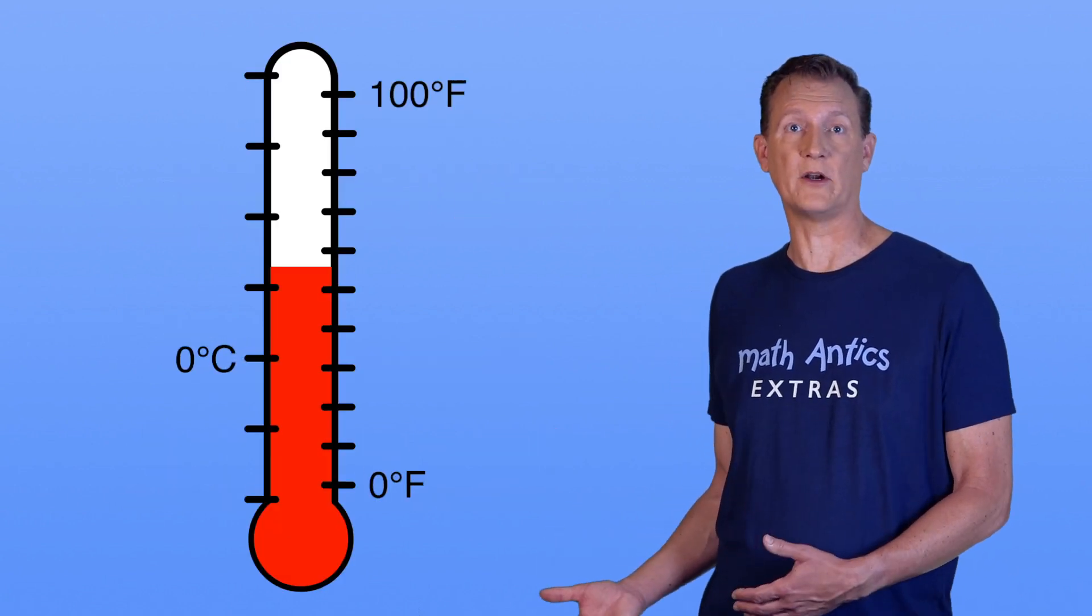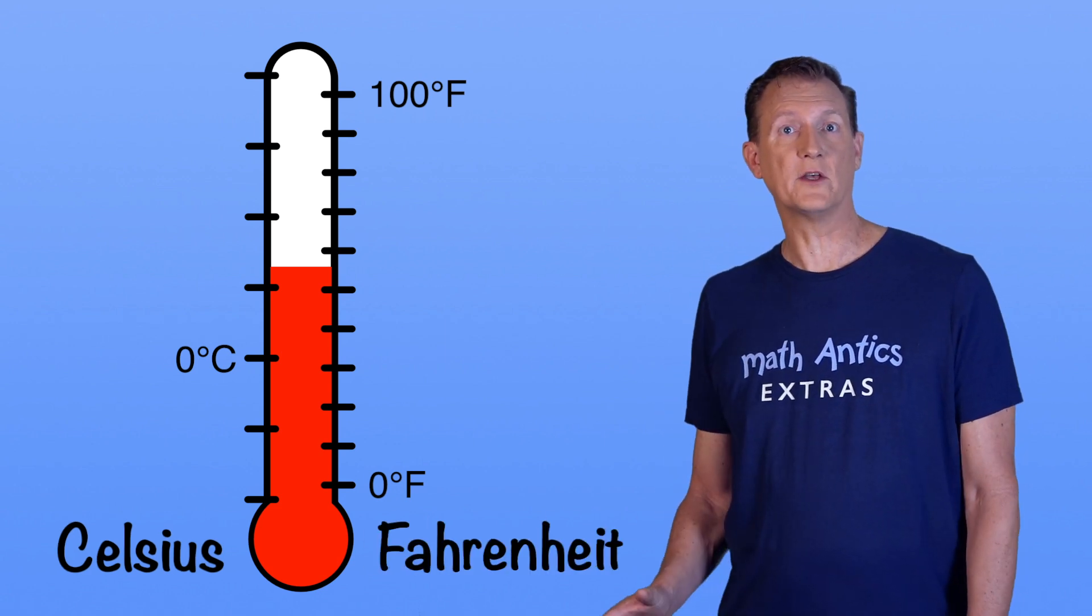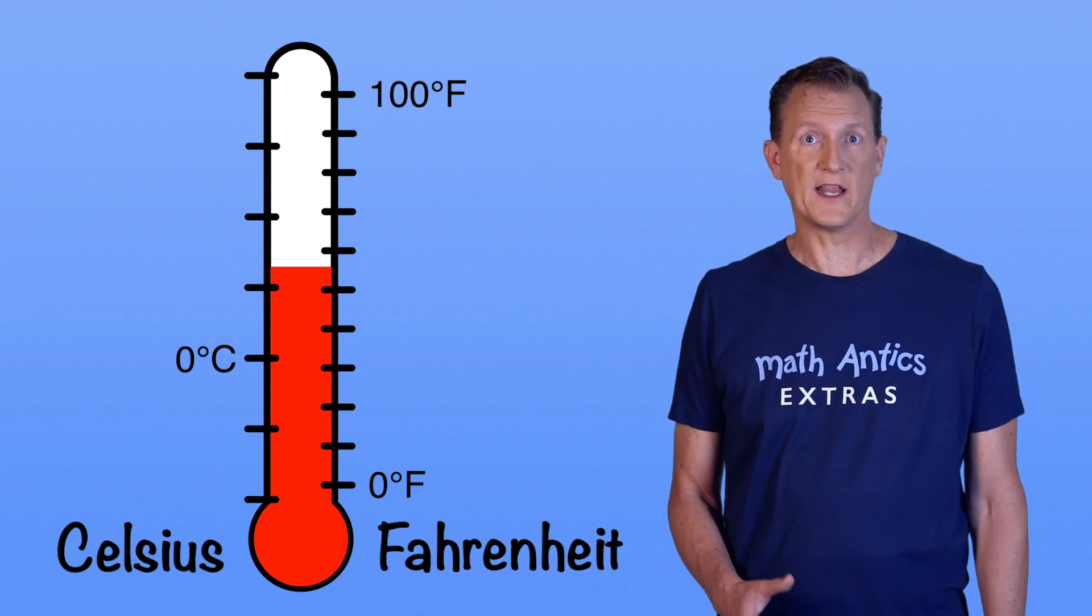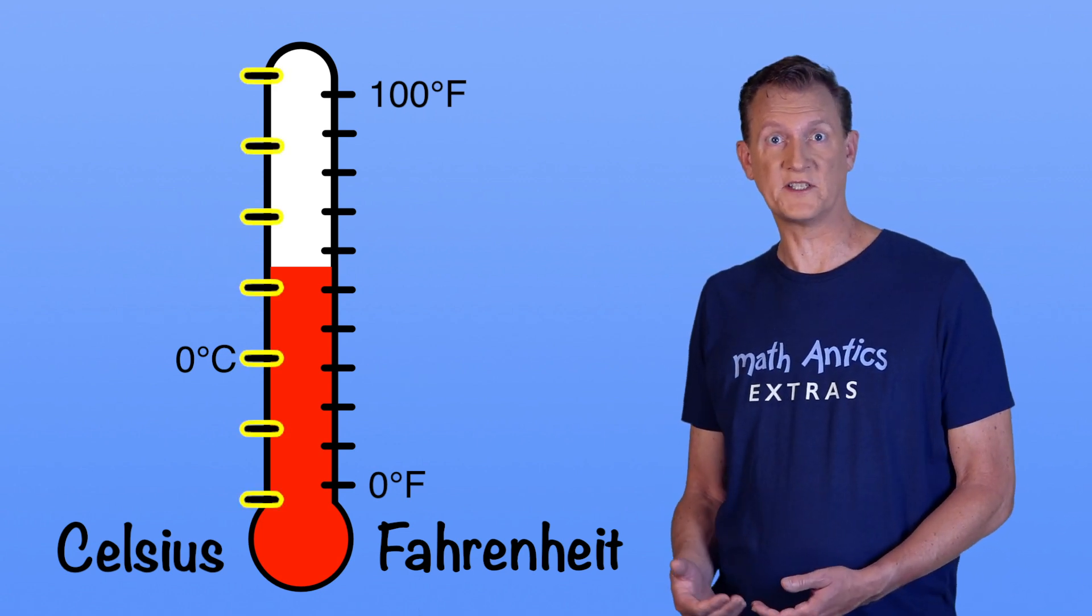To get a better idea of Celsius and Fahrenheit, let's look at this thermometer. It shows the Celsius scale on this side and the Fahrenheit scale on the other. Both scales use degrees to measure temperatures, and they have marks every 10 degrees. But you might have noticed that there are fewer marks on the Celsius side.